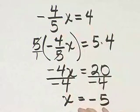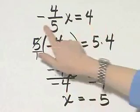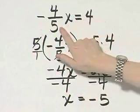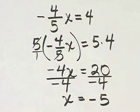Now, by the way, this is simply one way to solve. You could have multiplied both sides of your equation by the reciprocal of negative 4 fifths, which is negative 5 fourths. That would have worked also, but I'm just going to go ahead and stick with the steps that I gave you.